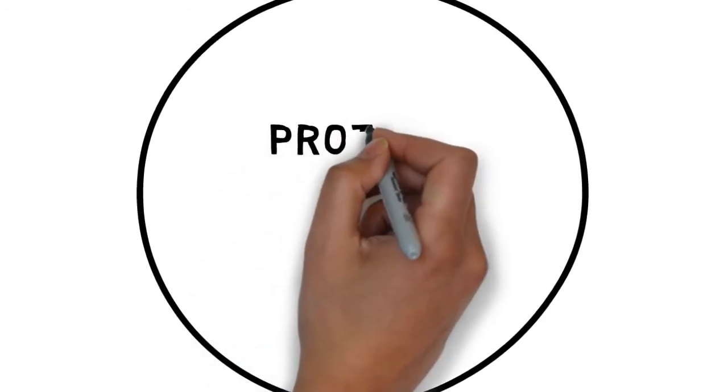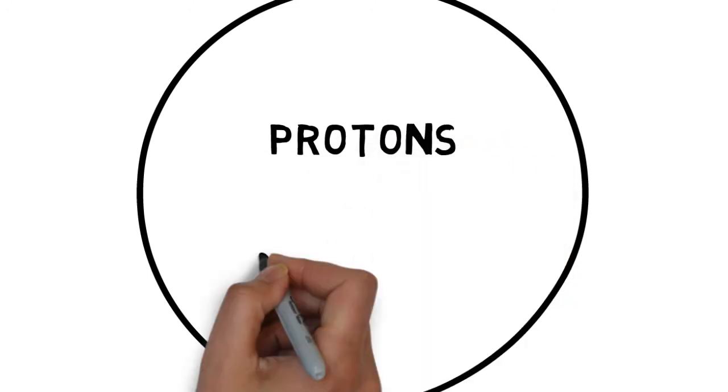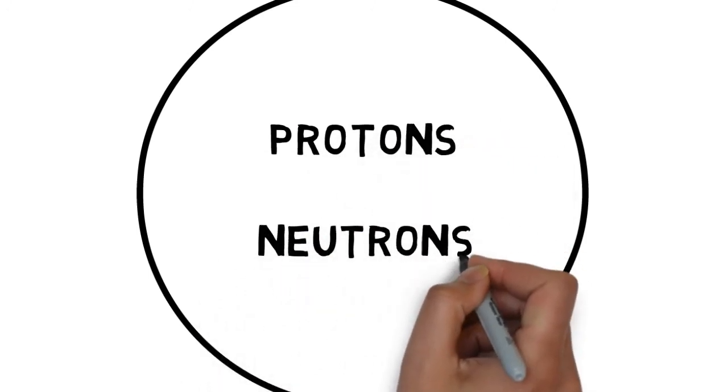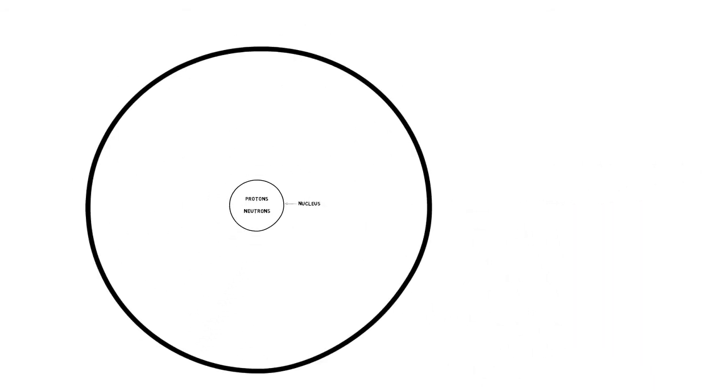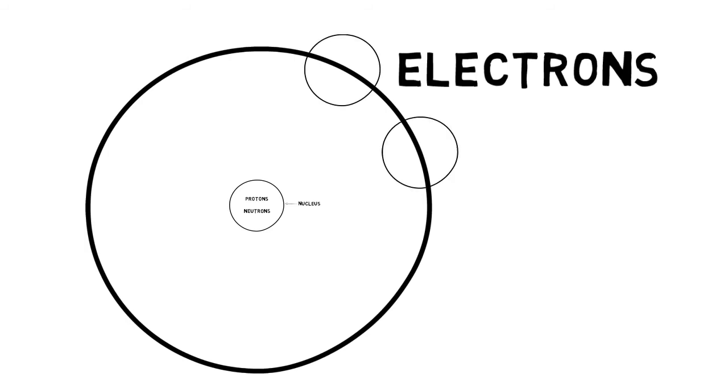Towards the center of the atom, there are two types of particles: protons and neutrons. This center of the atom is also known as the Nucleus. Electrons revolve around the nucleus in shells.